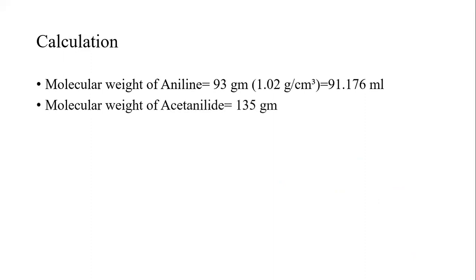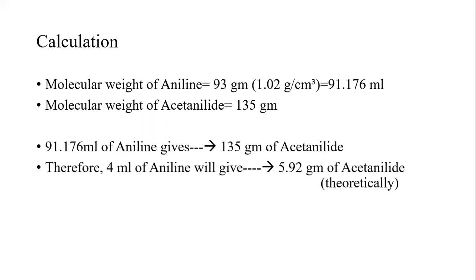We also know the molecular weight of acetanilide is 135 grams. So with the reaction that I have already shown, aniline is getting converted into acetanilide. So 91.176 ml of aniline gives you 135 grams of acetanilide. So 4 ml of aniline that we have taken in this experiment will give 4 × 135 ÷ 91.176 ml, that will give you 5.92 grams of acetanilide theoretically.